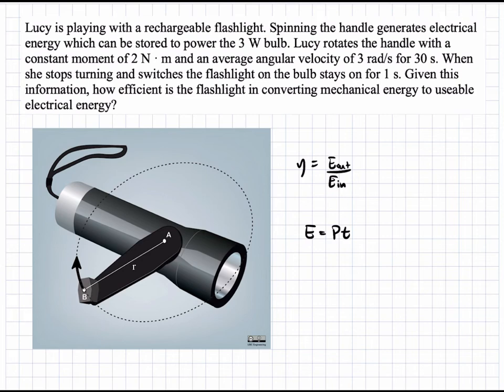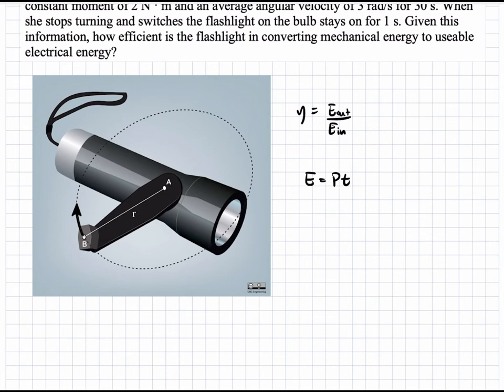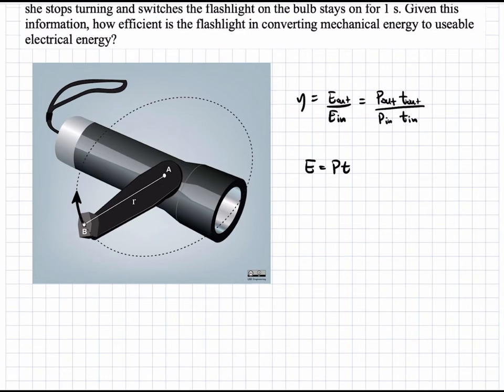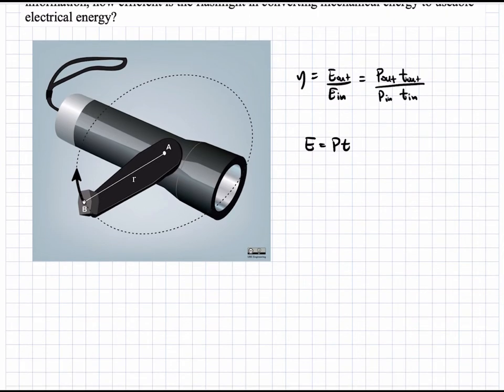So, we can rewrite the equation for efficiency as P-out times T-out, and then the bottom is P-in times T-in. Again, this is what we pull out of the system in the form of a light bulb. This at the bottom here is what we put into the system in the form of rotating that handle.